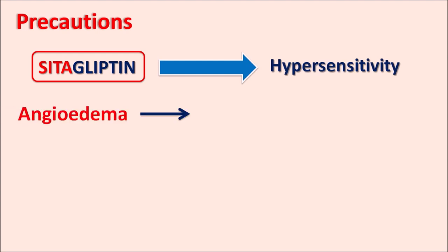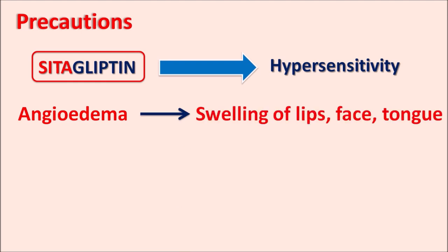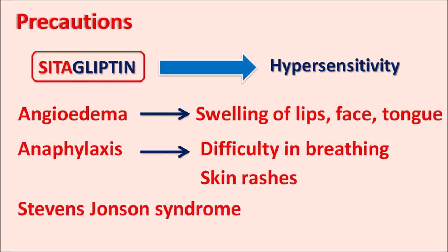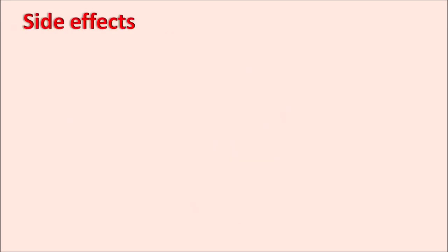A third precaution is hypersensitivity reactions. Cetagliptin can produce angioedema with swelling of lips, face, and tongue; anaphylaxis with difficulty breathing; skin rashes; and even a fatal hypersensitive reaction such as Stevens-Johnson syndrome. If any hypersensitivity is observed, the drug should be immediately stopped and replaced. These reactions can occur within the first three months of treatment.